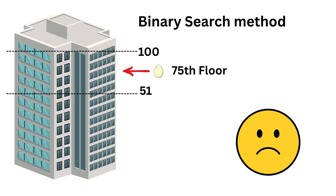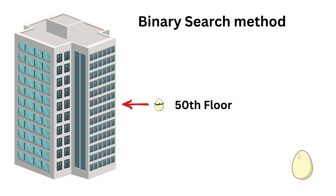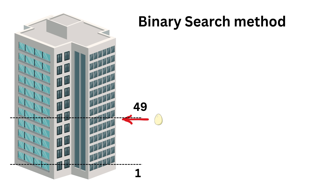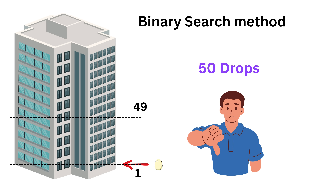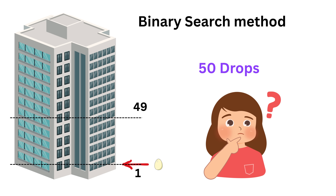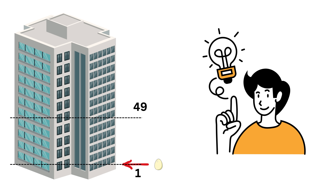But there's a catch. If the first egg breaks early, say on the very first drop, then we're stuck. We now have to do a linear search with the second egg, one floor at a time in that range. So while binary search reduces the number of initial drops, it fails badly when the first egg breaks too soon. The worst-case number of drops is 50, which is still very high. So again, we ask, can we reduce the number of drops even further?